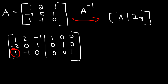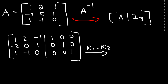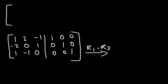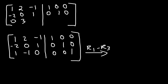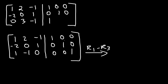Let's begin by turning this number into a 0. To do that, let's subtract row 1 by row 3, and apply the result to row 3. Row 1 is not going to change, so let's rewrite that. Row 2 is also not going to change. For row 3, it's going to be 1 minus 1, so that's 0. Then 2 minus negative 1, or 2 plus 1, which is 3. Then negative 1 minus 0 is negative 1. 1 minus 0 is 1. 0 minus 0 is 0. And 0 minus 1 is negative 1.